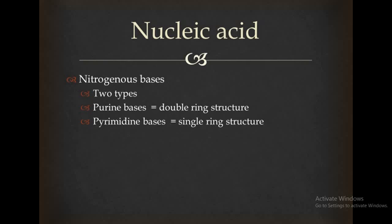Now regarding nitrogenous bases, purines have a double ring structure while pyrimidines have a single ring structure. Two forms exist: purines and pyrimidines. Purines are the double ring structure and pyrimidines are the single ring structure.